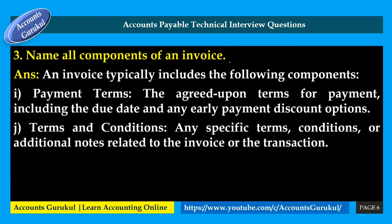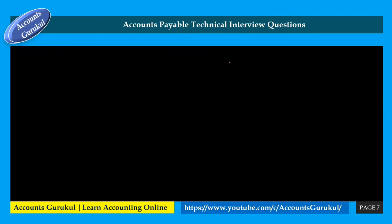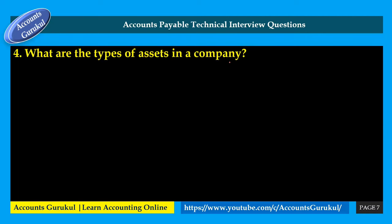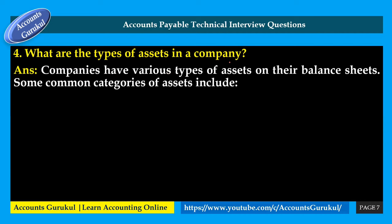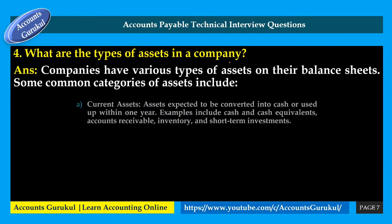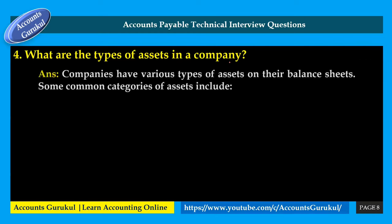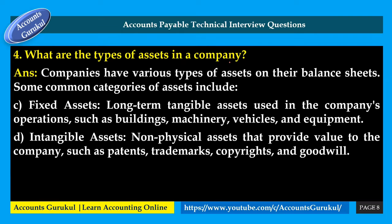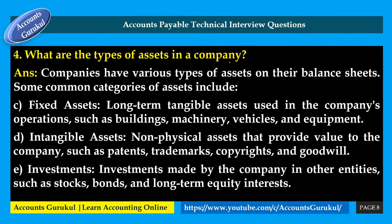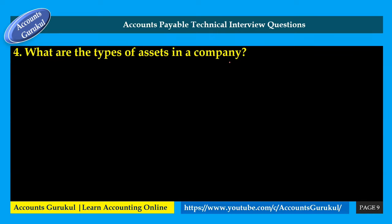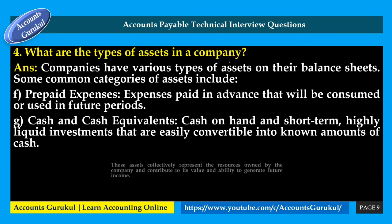Continuing invoice components: payment terms including the due date and early payment discount options; terms and conditions or additional notes related to the transaction; and the total amount due — the final amount the company needs to pay including all charges and deductions. Companies also have various types of assets on the balance sheet: current assets, non-current assets, fixed assets, intangible assets, investments, prepaid expenses, and cash and cash equivalents.